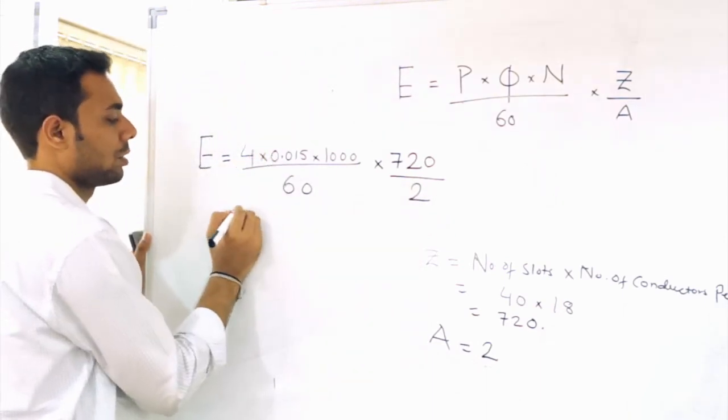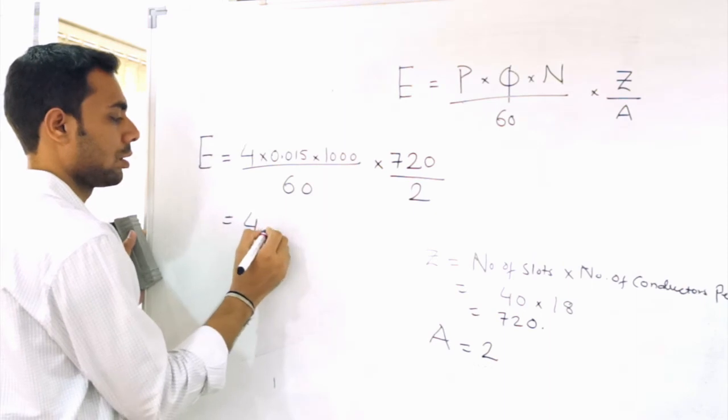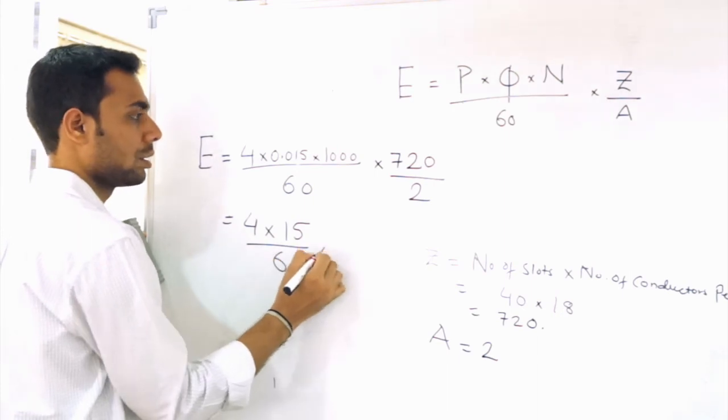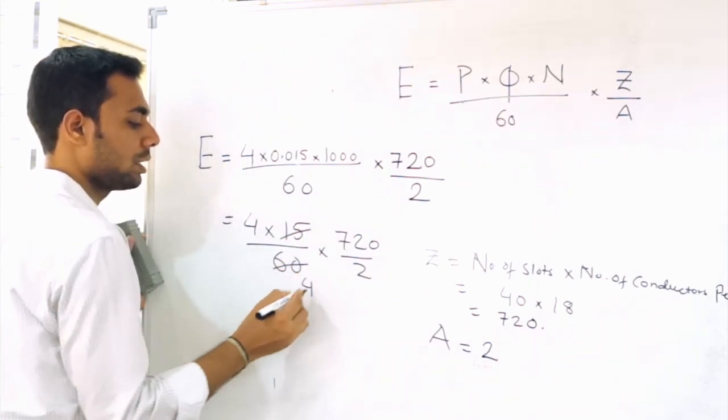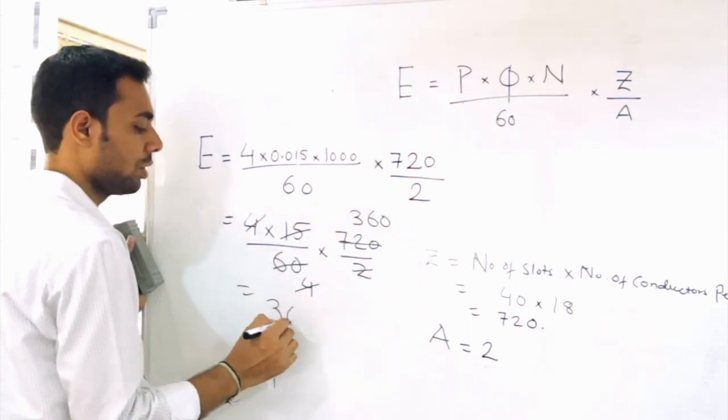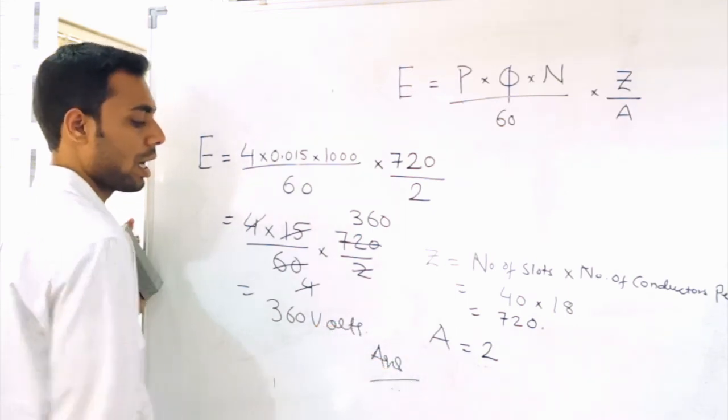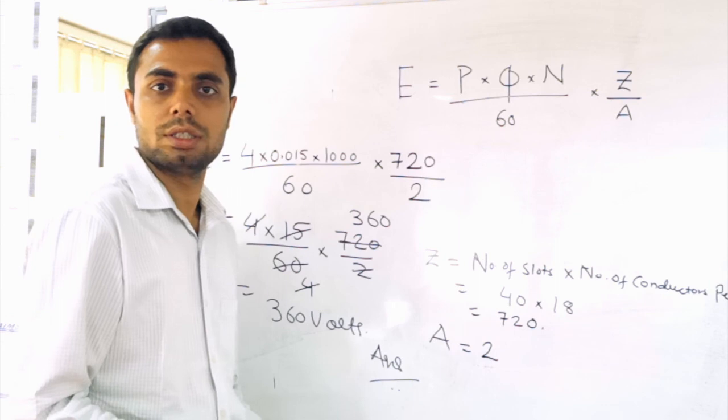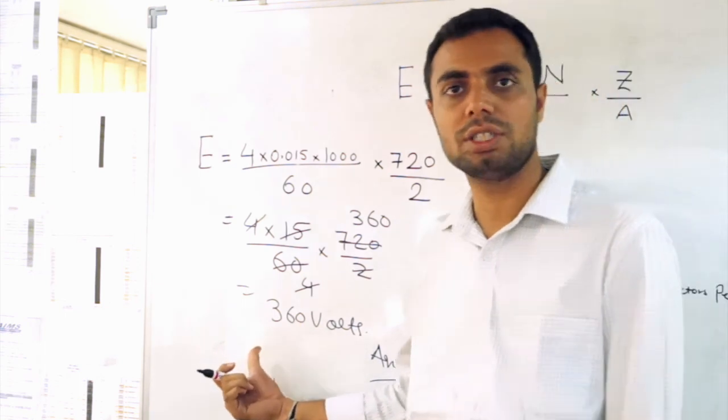So 4, if you multiply this it will become 15. 15 into 1000 is 60000, divided by 60. 4 into 4 gets cancelled. If you calculate this becomes 360. So 360 volts is the answer. What is the EMF generated in case of DC motor as given in the problem? It is 360 volts.